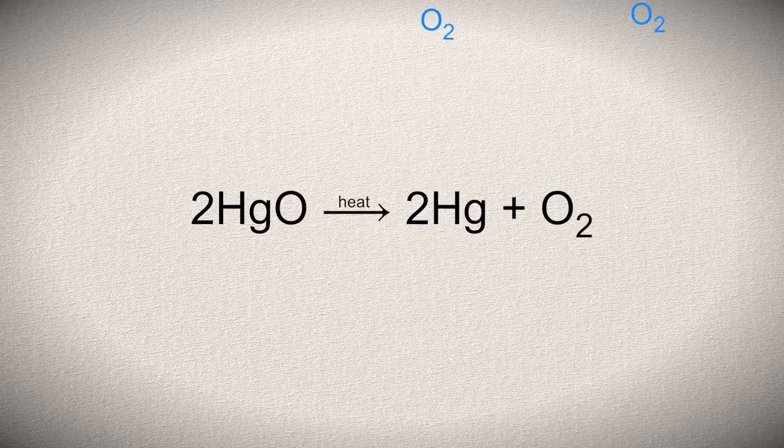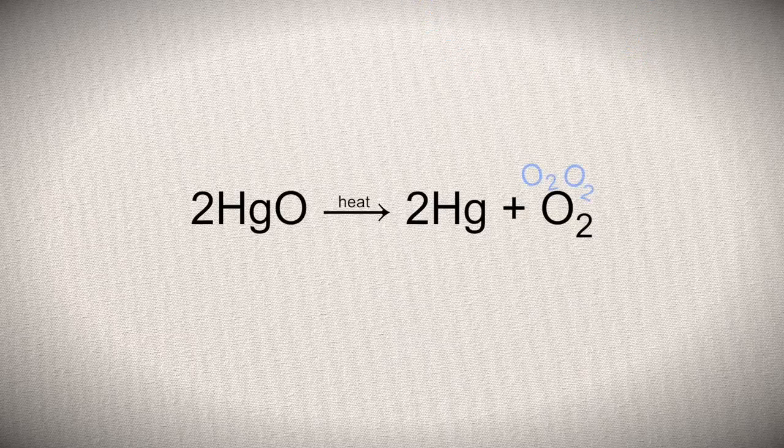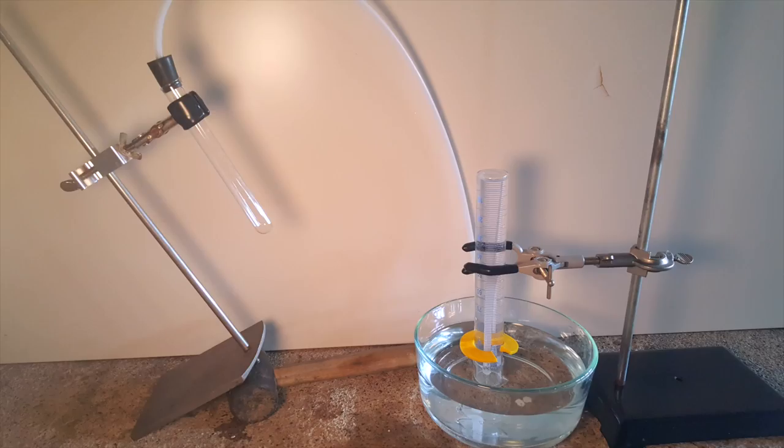In Priestley's experiment, he noticed that a mouse could survive for a while when in a closed container with mercuric oxide heated up. This was, of course, because the mouse was able to breathe the oxygen until it was all used up. Now, let's get into the experiment.